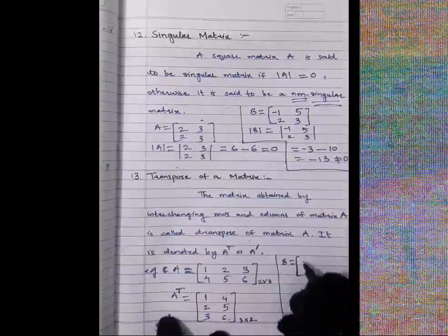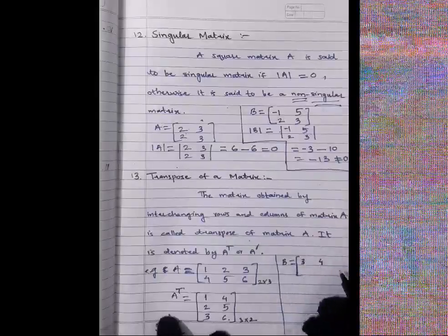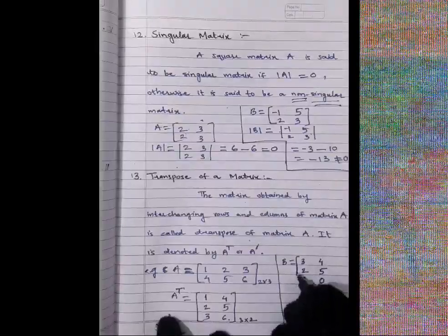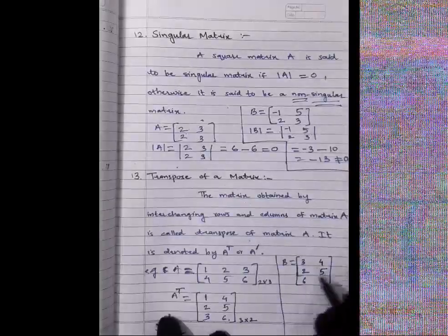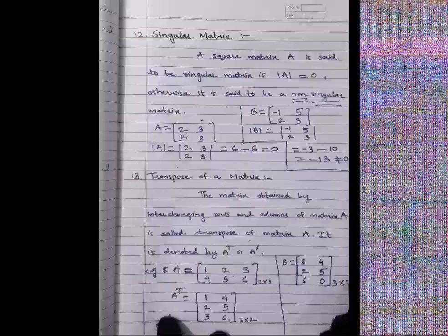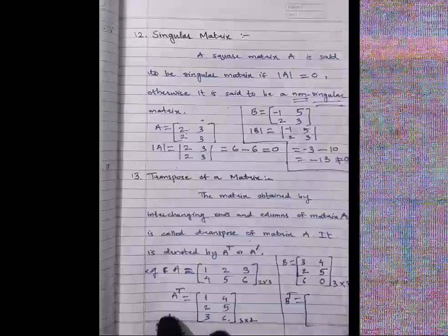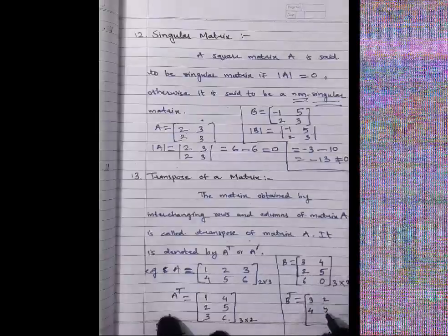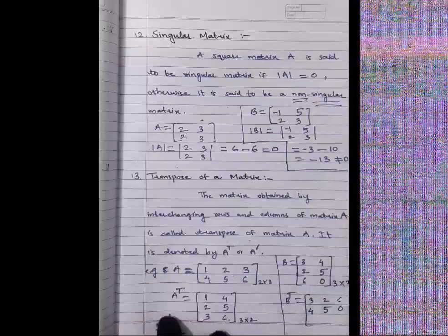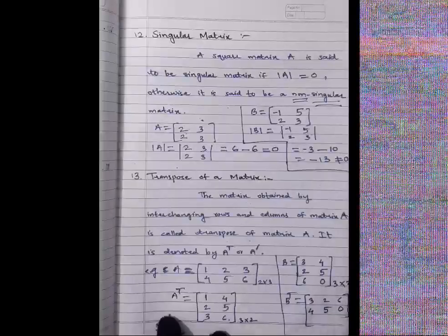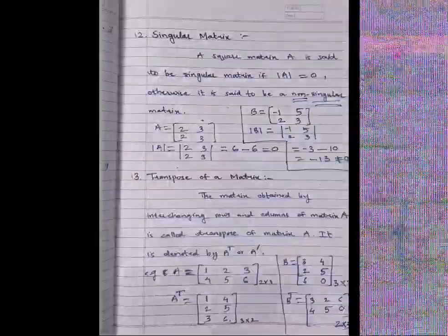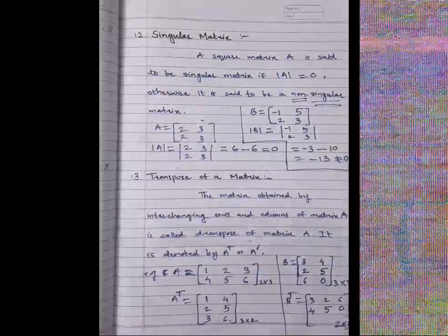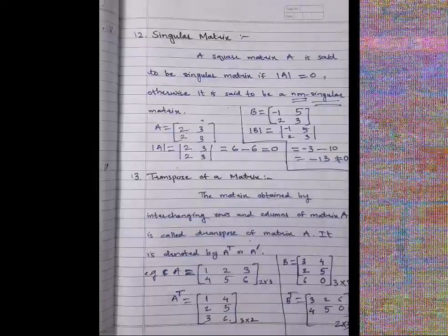In B transpose, the first row (3, 4) becomes the first column, the second row (2, 5) becomes the second column, and the third row (6, 0) becomes the third column. The resulting matrix has 2 rows and 3 columns. This completes all the types of matrices covered in this lecture.